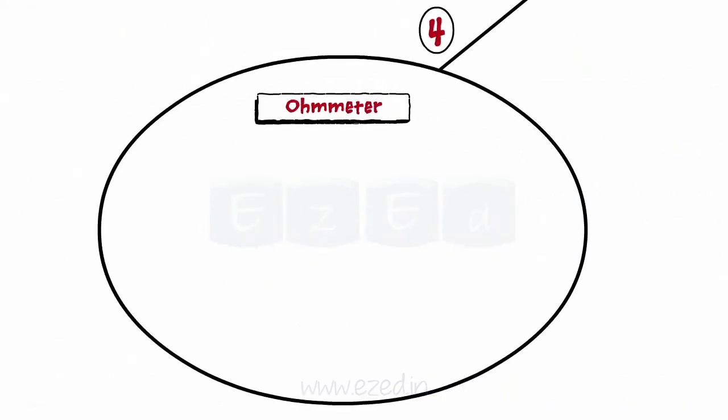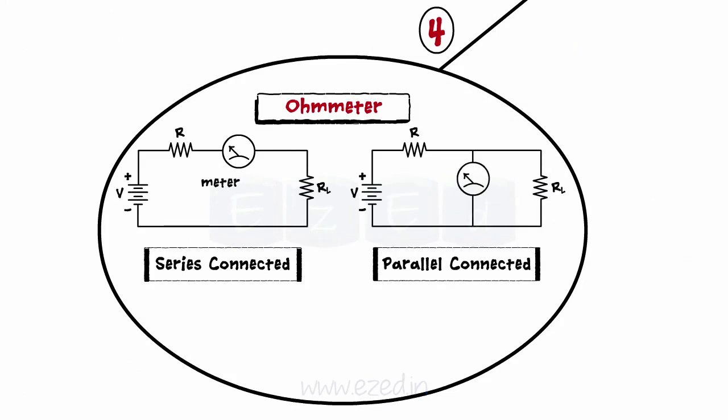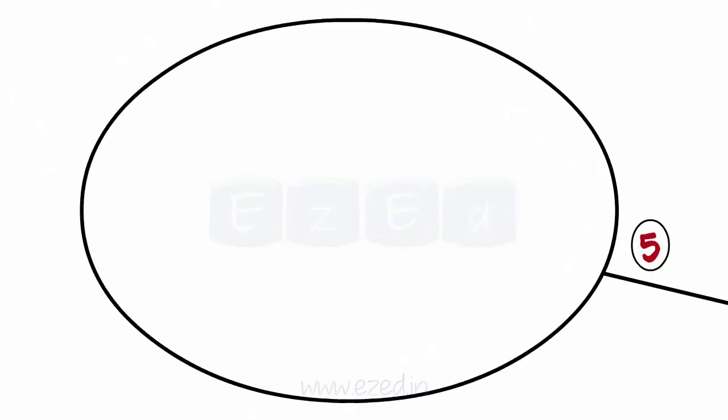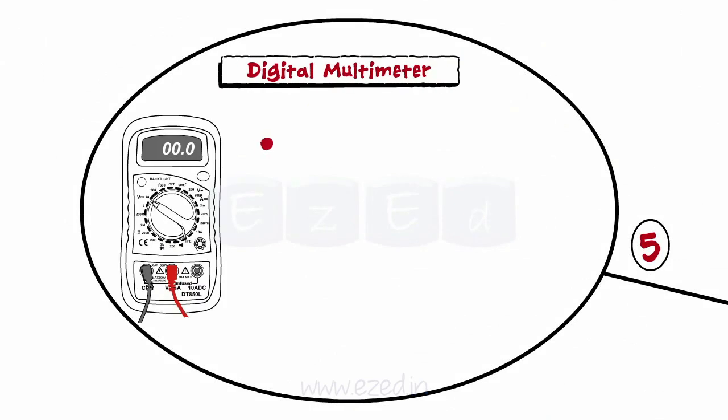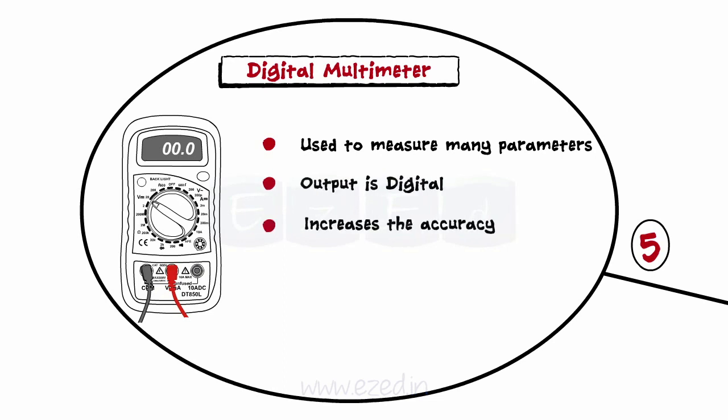An ohmmeter can be connected in series or parallel. When connected in series, voltage remains constant and current is measured. And when connected in parallel, current is constant and voltage is measured. Digital multimeter is a device used to measure many parameters. The output being digital, it increases the accuracy of the measurement.